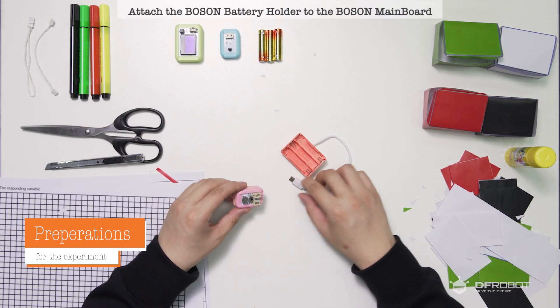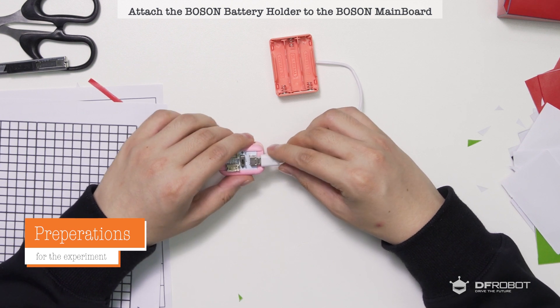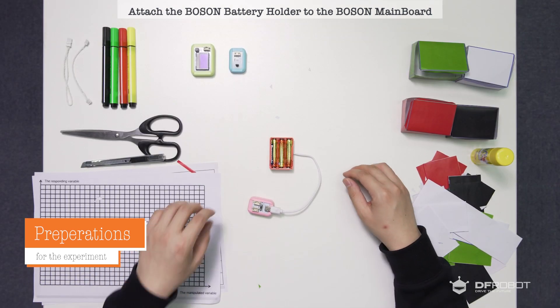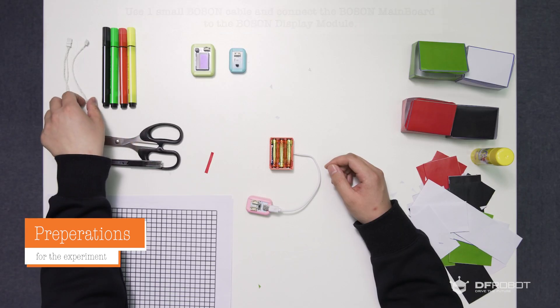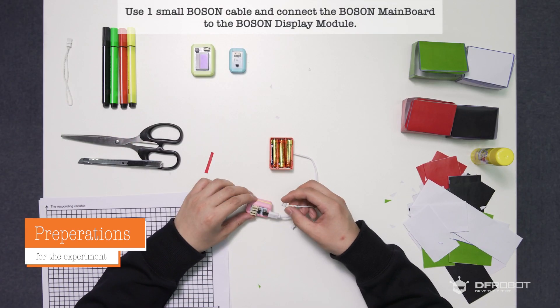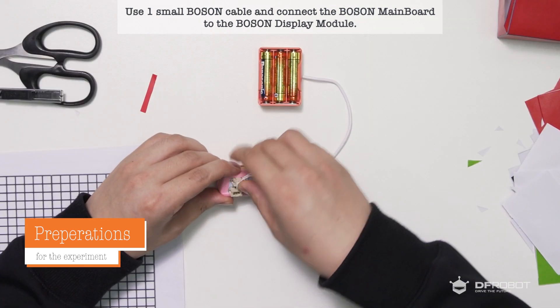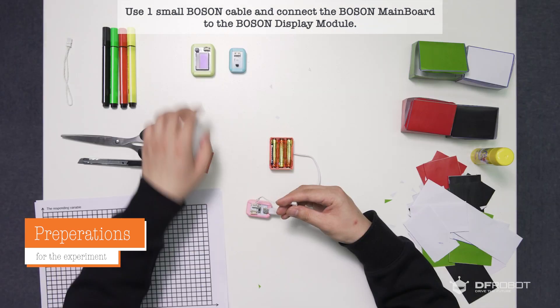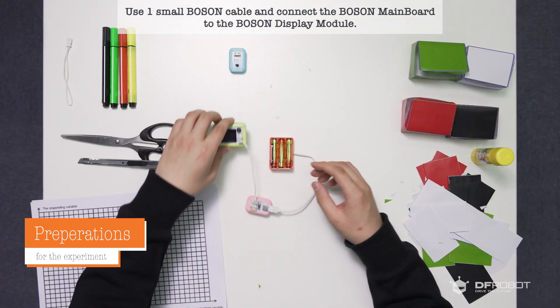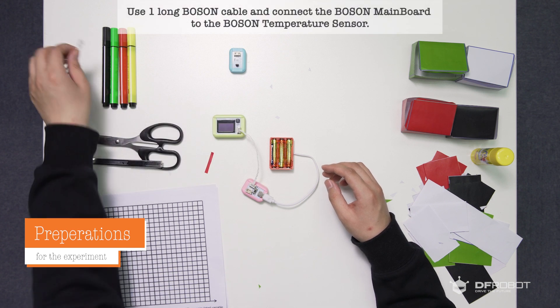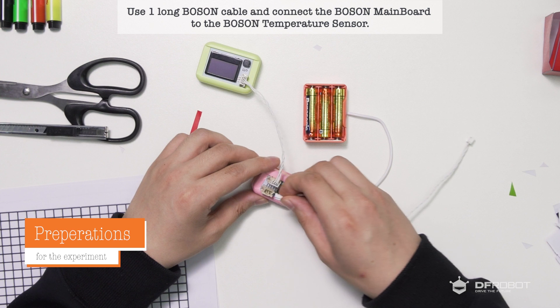Attach the Boson battery holder to the Boson mainboard and make sure the Boson mainboard is turned off. Use one small Boson cable and connect the Boson mainboard to the Boson display module. Use one long Boson cable and connect the Boson mainboard to the Boson temperature sensor.